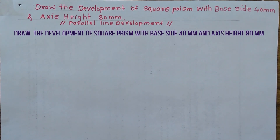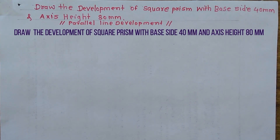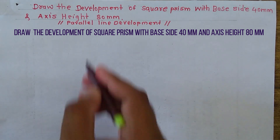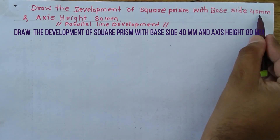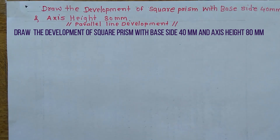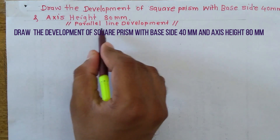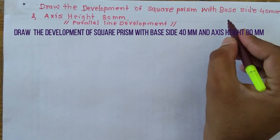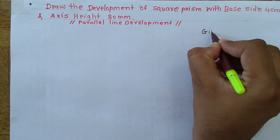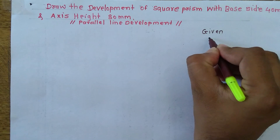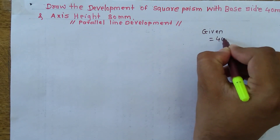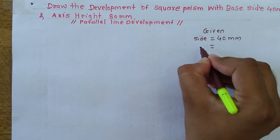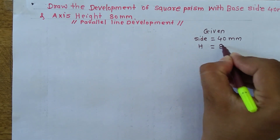Hi friends, today we will see a tutorial on development of surfaces. The problem statement asks us to draw a development of a square prism with base side 40 mm and axis height 80 mm. This type of problem we have to solve by the parallel line development method. The base side is 40 mm and axis height is 80 mm.